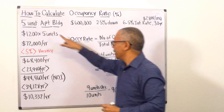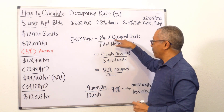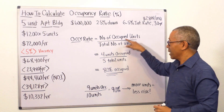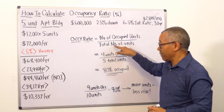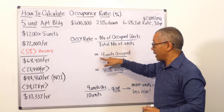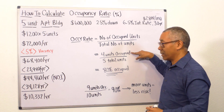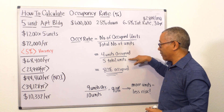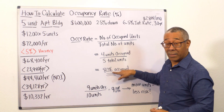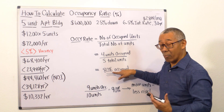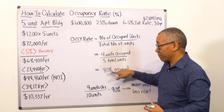I have a five unit apartment building. The occupancy rate is equal to the number of units occupied, divided by the total number of units in the building. In this case, with a five unit building, I have four units occupied, which means I'm 80% occupied — so I'm missing one. Four out of five is 80%.